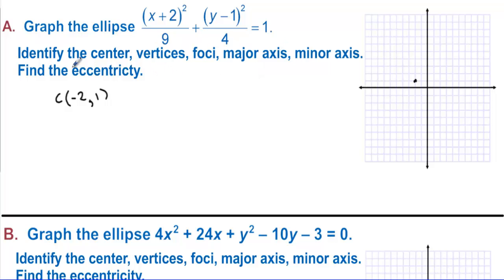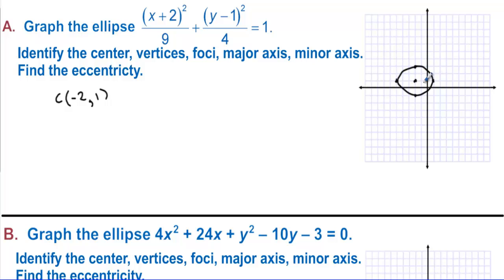From the center, we go right and left 3 units because the 9 is under the x (a = 3). Then from the center we go up and down 2 units because the 4 is under the y (b = 2). Now we can draw the ellipse. Since the longer axis is horizontal, there are vertices at the left and right, and co-vertices at the top and bottom.